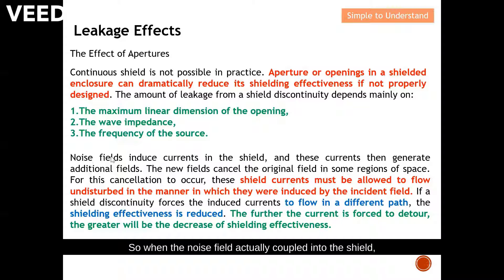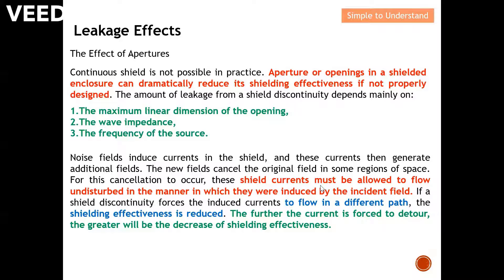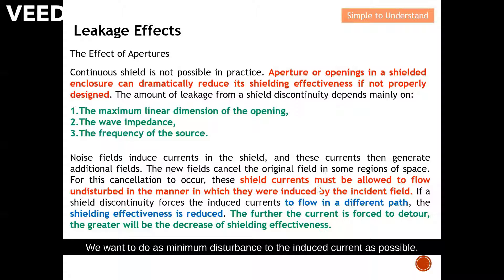When the noise field couples into the shield, it forces an induced current to flow. This additional current cancels the original field, which is ideal. In order to have this cancellation, we must not disturb how the shield current flows. We want to cause as little disturbance to the induced current as possible. Let's look at the next slide to understand this better.